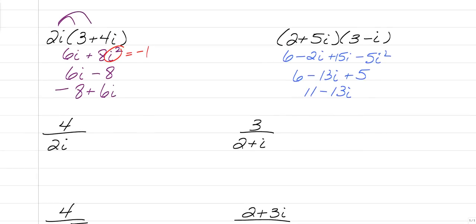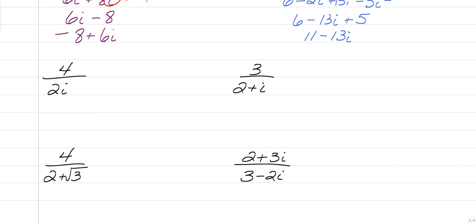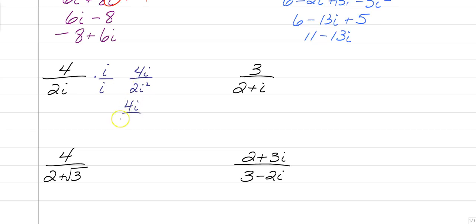That's how you do adding, subtracting, and multiplying. Now when you are dividing, you have to follow some old rules from working with radicals. You are not allowed to have a radical in the denominator, and similarly, we're not allowed to have an imaginary number in the denominator either. In order to get rid of an i in the denominator, we just have to multiply the top and bottom by an i. So that gives us 4i over 2i squared, which is negative 2. So we have 4i over negative 2, and the answer is negative 2i.